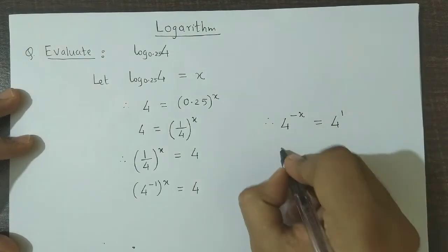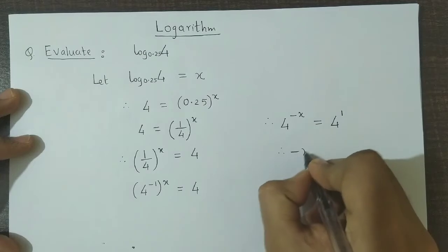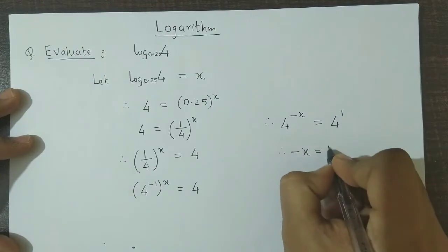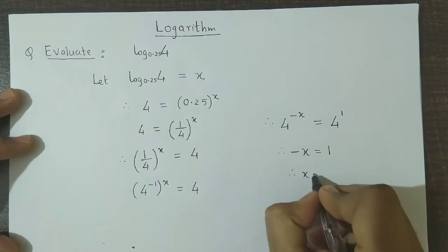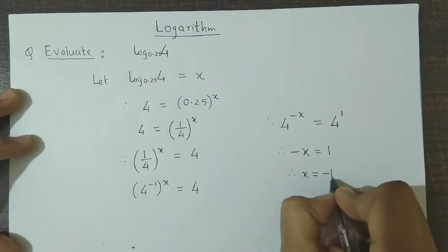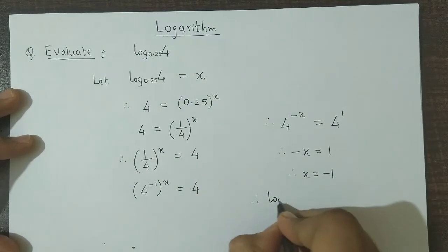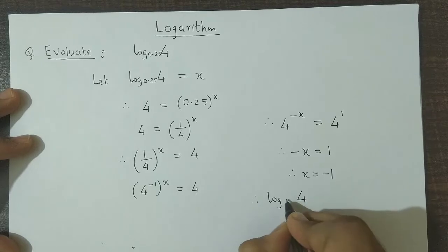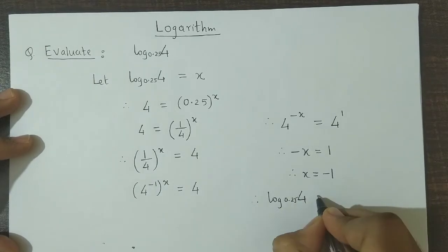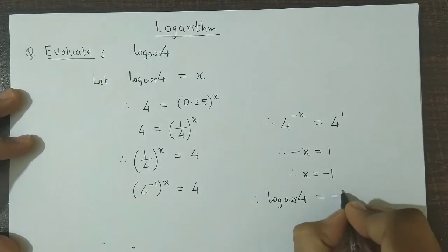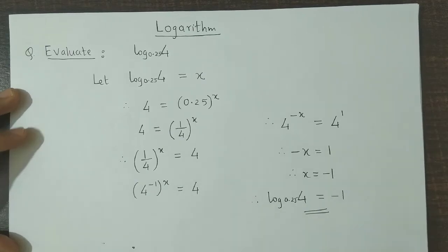Now comparing both the sides we obtain minus x is equal to 1. Therefore x is equal to minus 1. And hence we could say log of 4 to the base 0.25 is equal to minus 1.